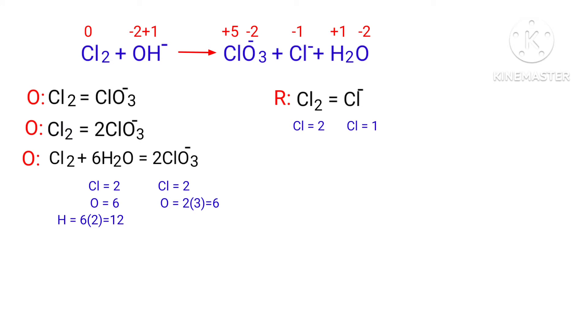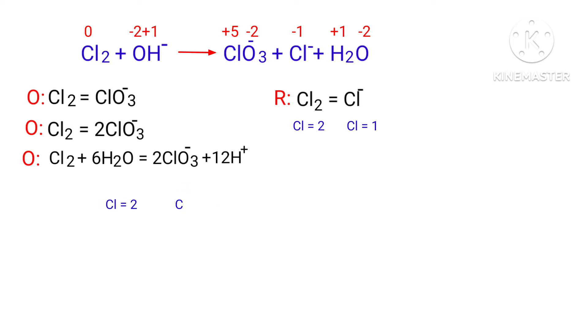Now we need to balance the hydrogen atoms. To do this you can produce H⁺ ions. Now the number of atoms are balanced in the oxidation half reaction.